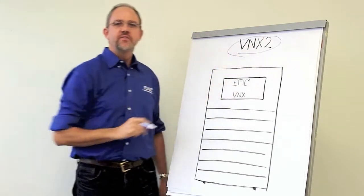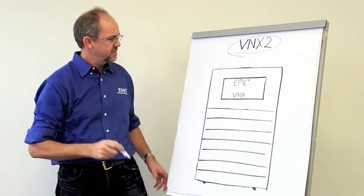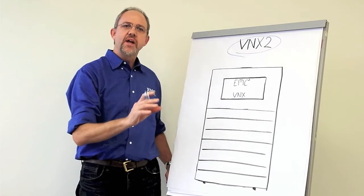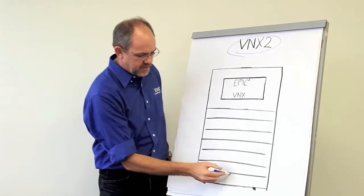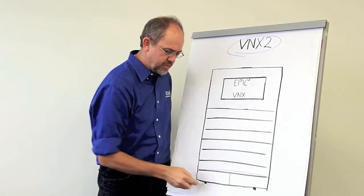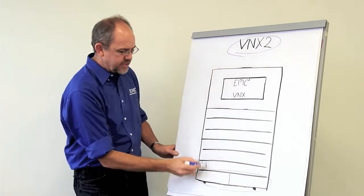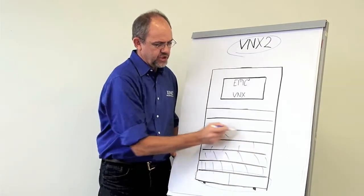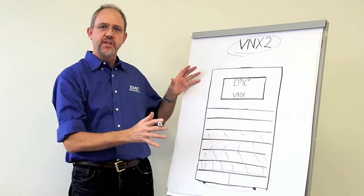First of all, the VNX 2, our next generation VNX. It's the industry leading mid-range storage platform from EMC. It has typically two storage processors and we scale up to 1500 drives depending on which configuration option of the VNX you go for.